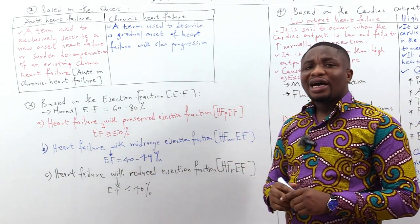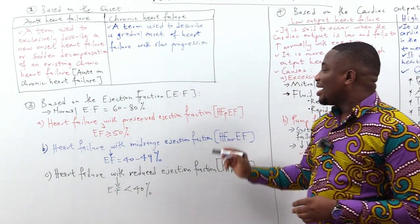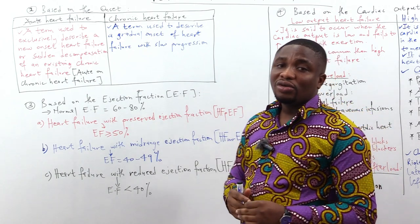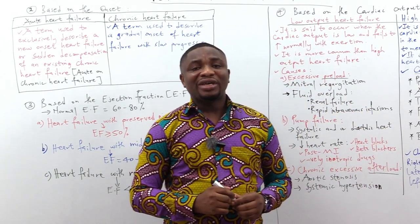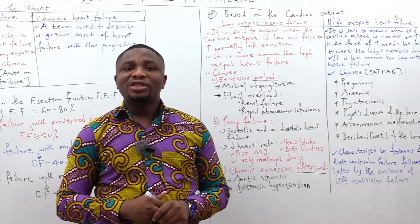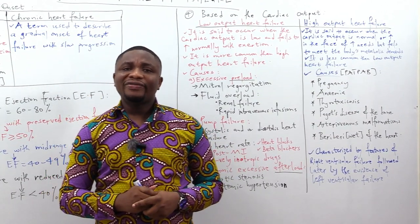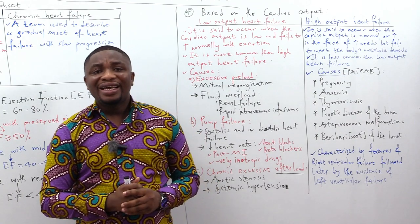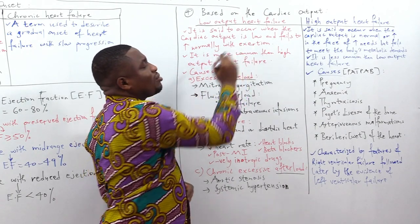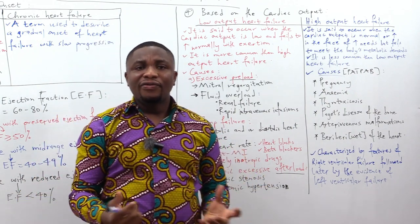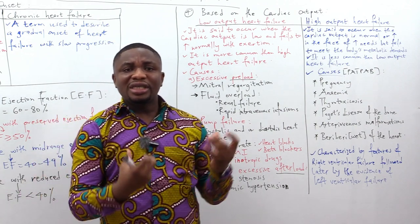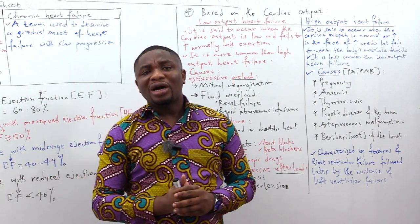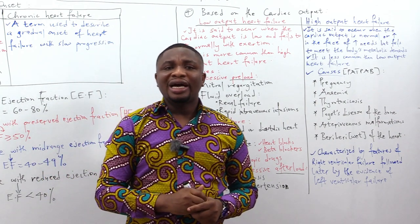Each of the three types of heart failure based on ejection fraction is typically written in abbreviated form — take note of the way they are written. The next classification is based on cardiac output: low output versus high output heart failure. Low output heart failure occurs when the cardiac output is low and fails to increase normally with exertion, meaning the heart cannot meet demand for more oxygenated blood. Low output cardiac failure is more common than high output cardiac failure.